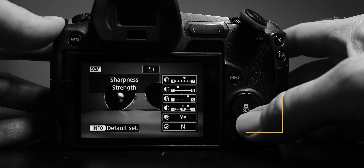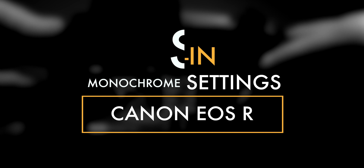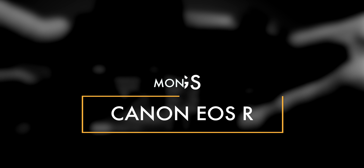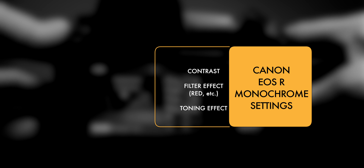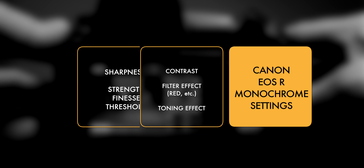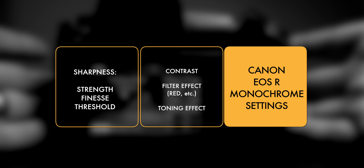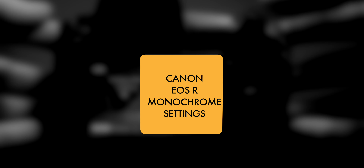Under the info button, you'll see that you have access to six different settings. These settings are sharpness strength, sharpness finesse, sharpness threshold, contrast, filter — like red, orange, yellow — and then there's a toning effect.